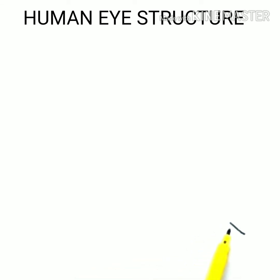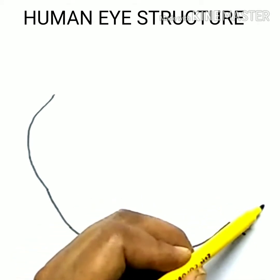Hello viewers, today we are going to draw a human eye diagram. The human eye is an optical instrument that enables us to see. The human eye acts like a camera, enabling us to capture the colorful picture of our surroundings. An inverted real image is formed on the retina.